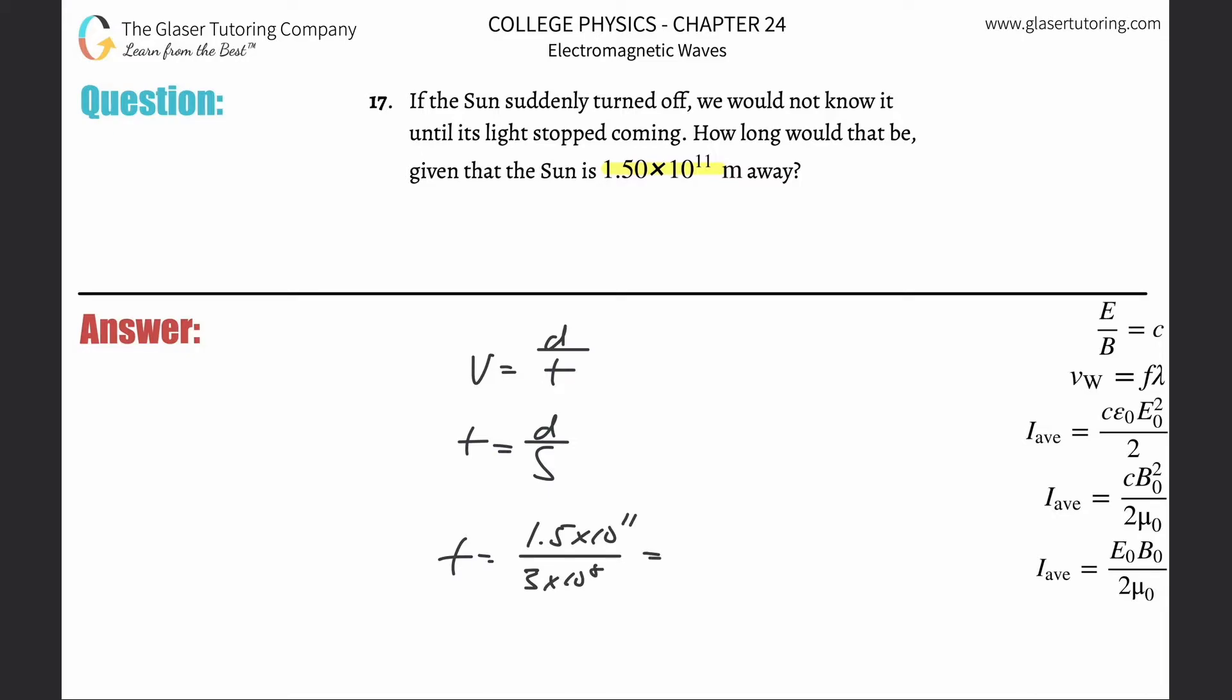Let's see what this would work out to be. This would be 1.5×10^11 divided by 3×10^8. It's about 500, so 500 seconds. It'd take about 500 seconds.